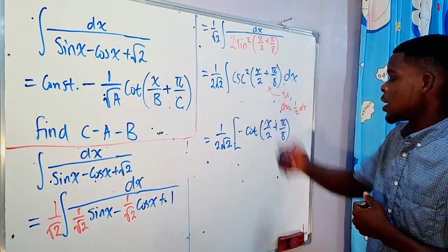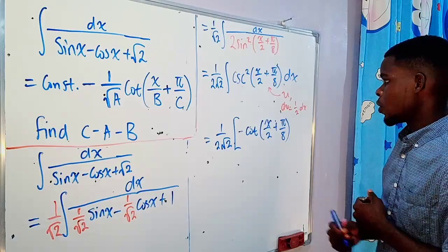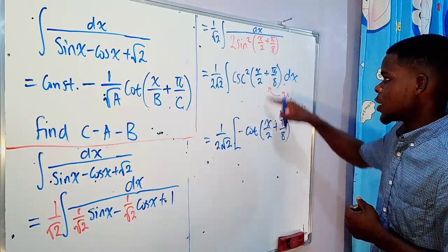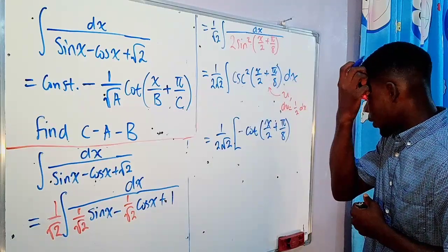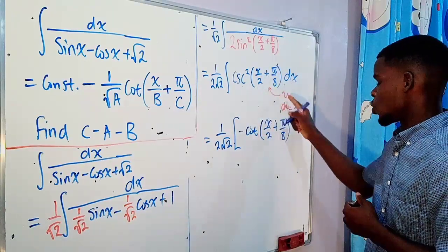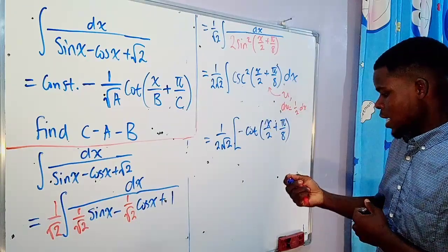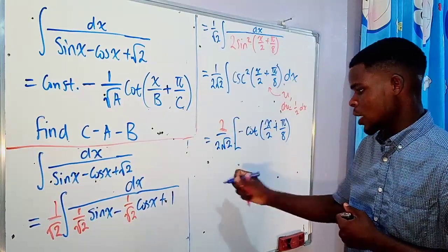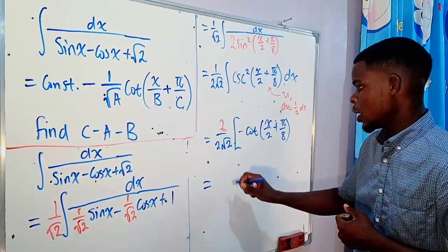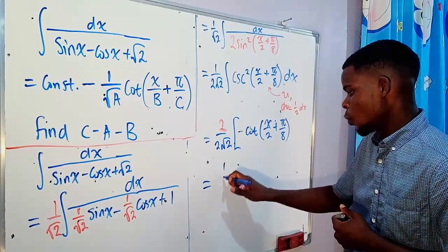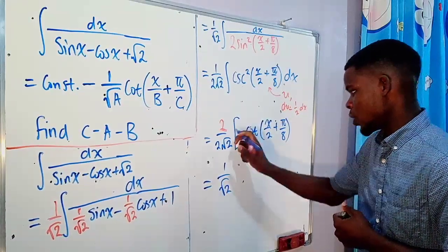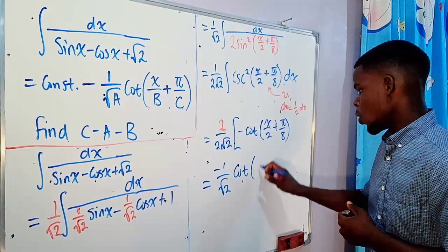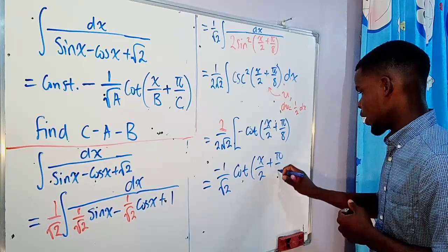Multiplying by the inverse of the derivative of the inside function brings a factor of 2 to the numerator, cancelling the 2 in the denominator. The result is negative 1 over square root of 2 times cotangent of (x/2 + pi/8), plus an arbitrary constant.